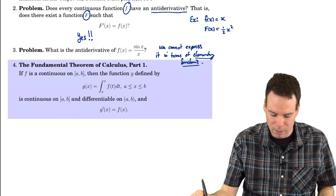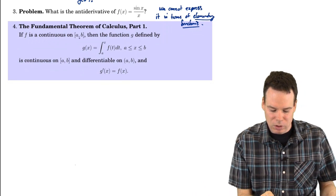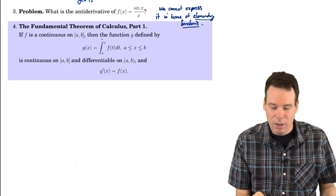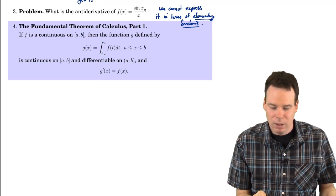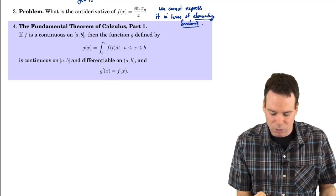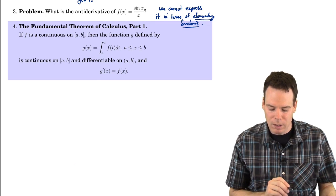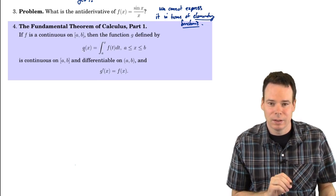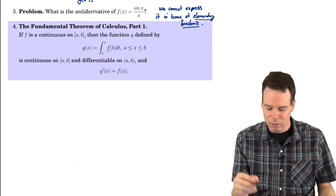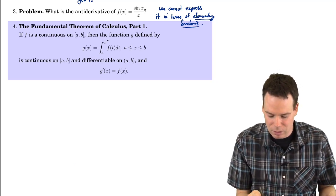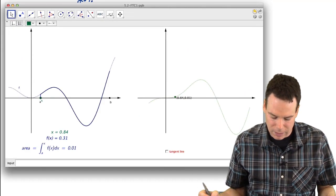If f is a continuous function on [a, b], then we define a function g in terms of an integral: it's the integral from a to x of f(t) dt. It turns out that this function g has a nice property — its derivative is f. This definition of g might look a little bit confusing, so let's get an idea for what this is saying.